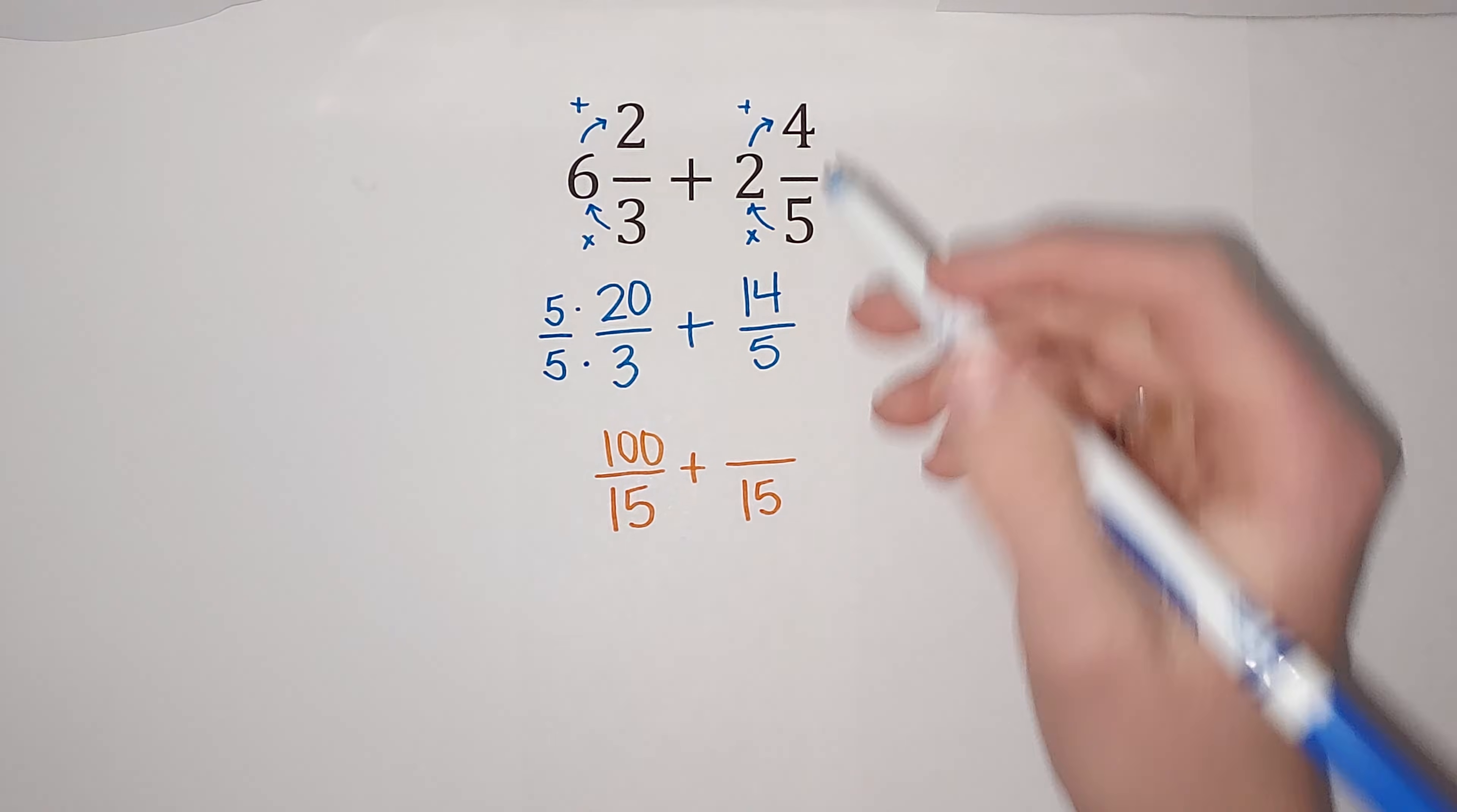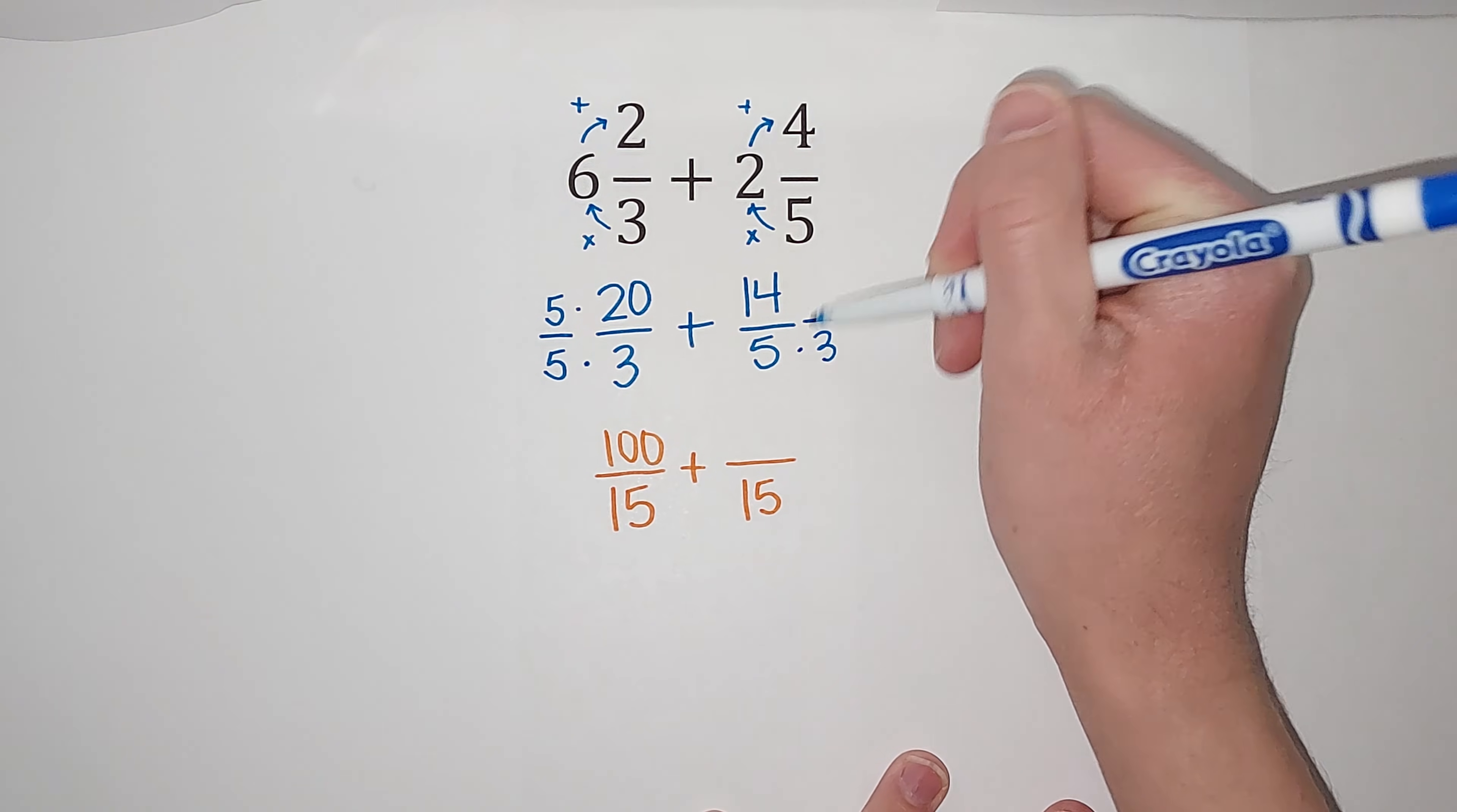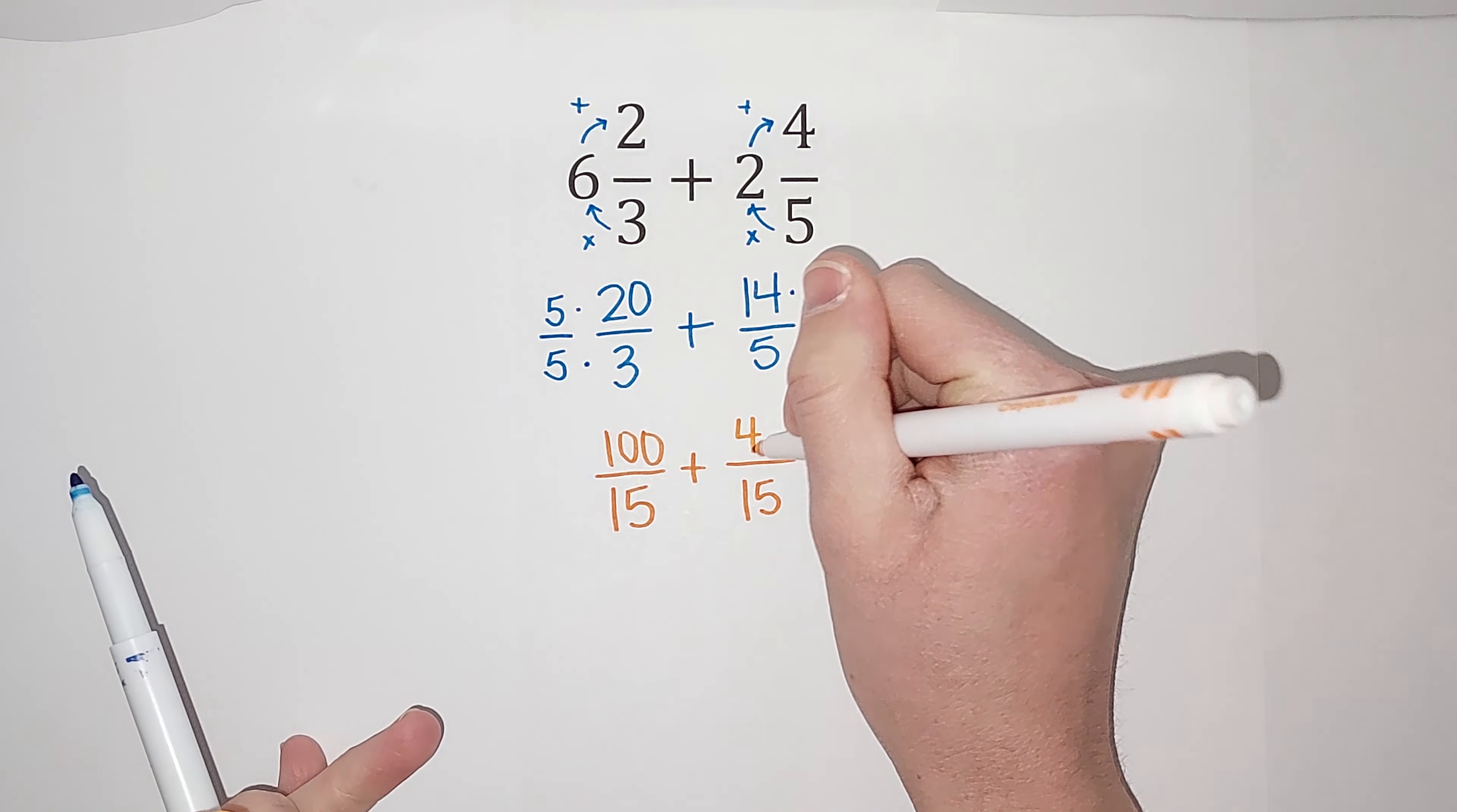Now we got to do it to the other one. So I multiply five by three to get 15, but if I multiply the bottom, I got to multiply the top because then I'm multiplying by three over three, which is one. So 14 times three gives me 42.